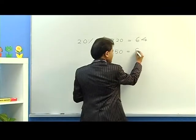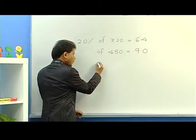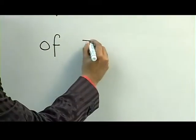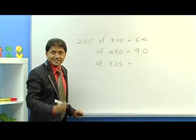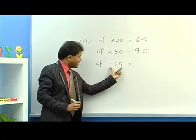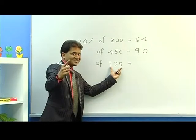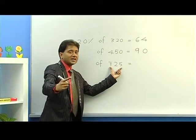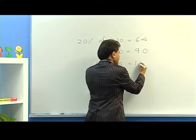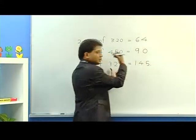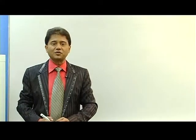If you want 20% of 450, first find 10% which is 45, then double it to get 90. Let's take another one: 20% of 725 — find 10% which is 72.5, and now double it. Double of 72.5 is 145, so that is your answer.